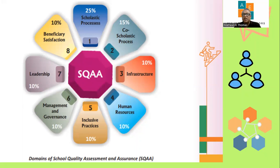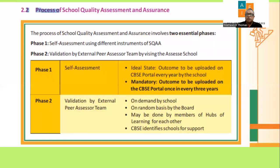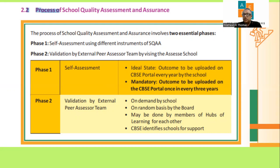The assessment is divided into two essential phases. Phase one is self-assessment — it's important that we assess ourselves, where do we stand. This has to be uploaded on the CBSE portal. Once in three years, you have to do phase one. Every three years you can do it, and the self-assessment has to be uploaded on the CBSE portal.